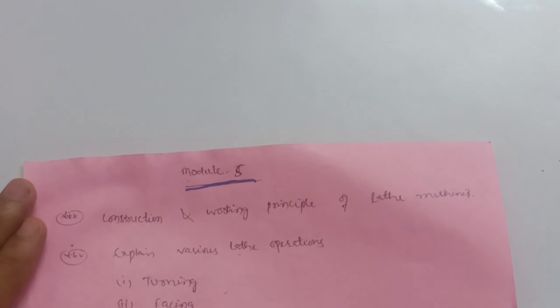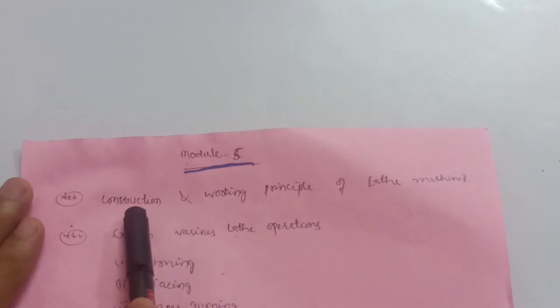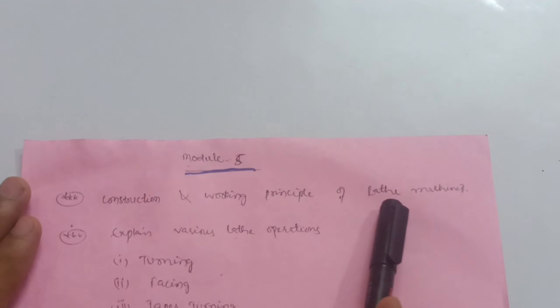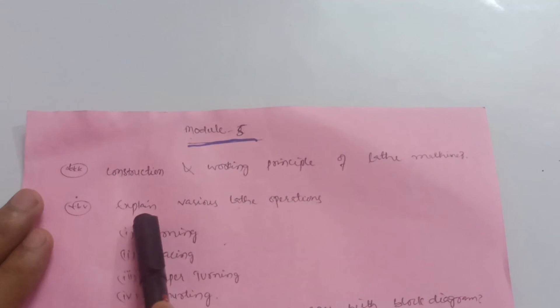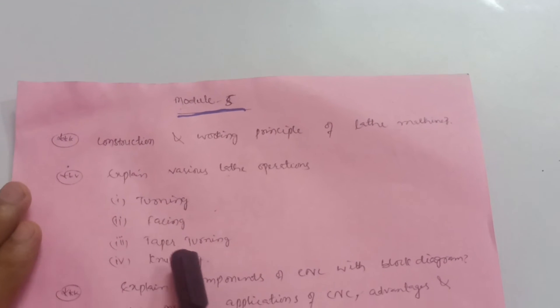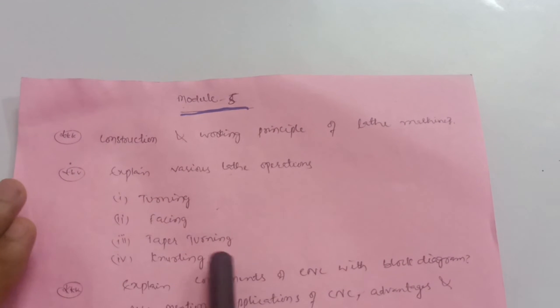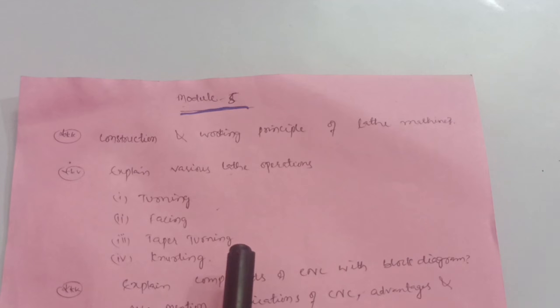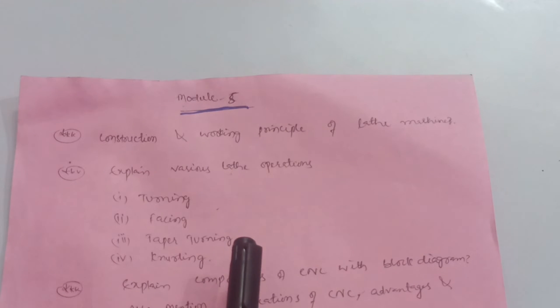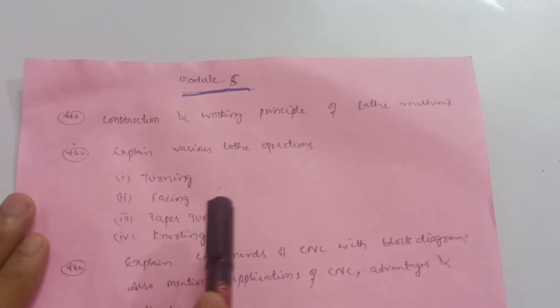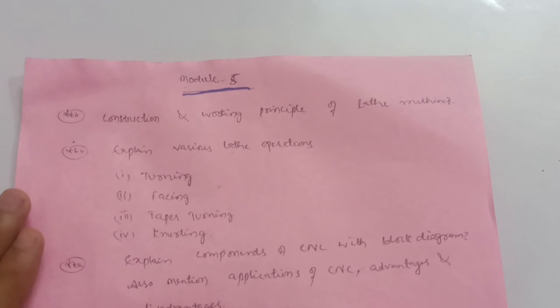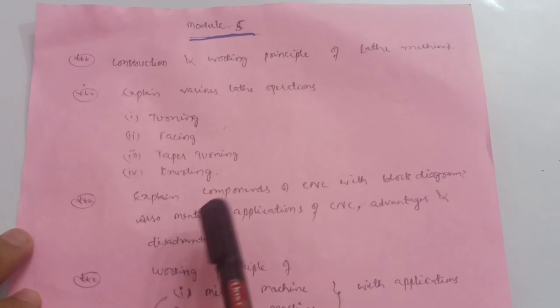They will definitely ask 15 or 16 marks from this content, so focus on these topics. No need to go through steam formation and application — there are some numerical problems you can easily neglect if you just want to pass. This is the content for Module 1. Module 5 is also a passing module. The first important question is construction and working principle of the lathe machine, then various lathe operations like turning, facing, taper turning, and knurling.